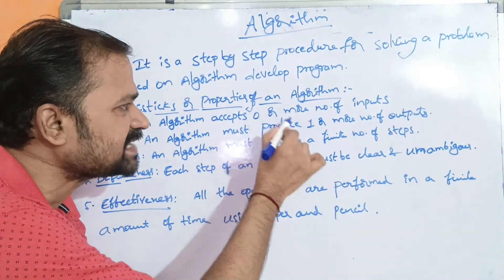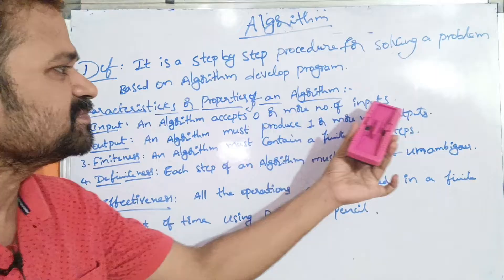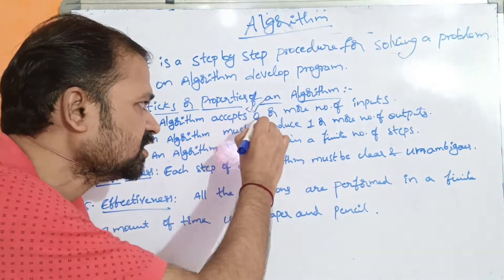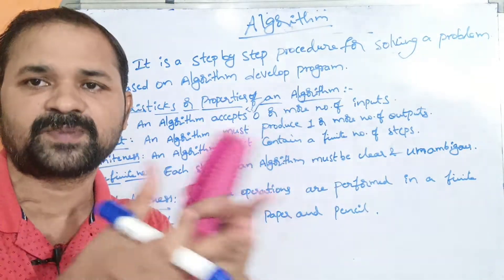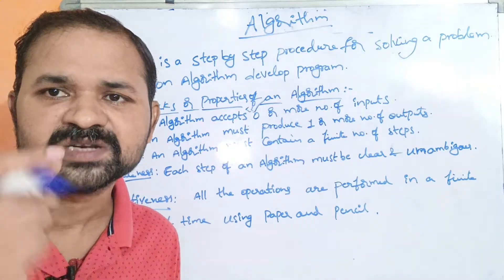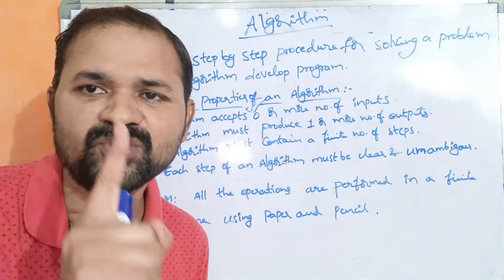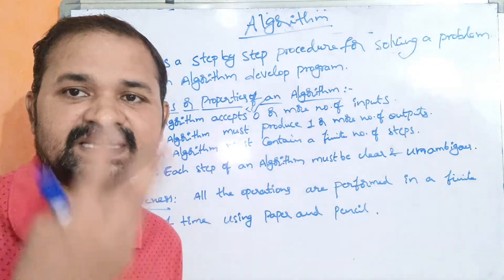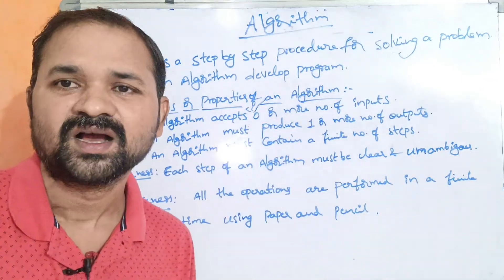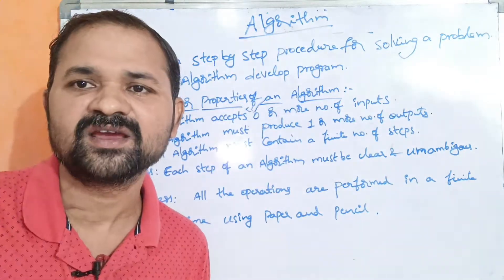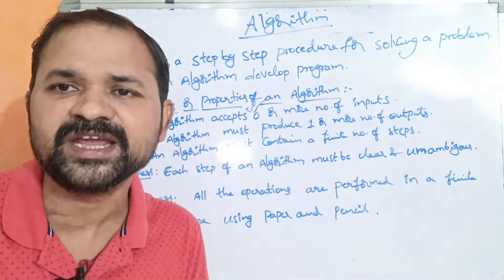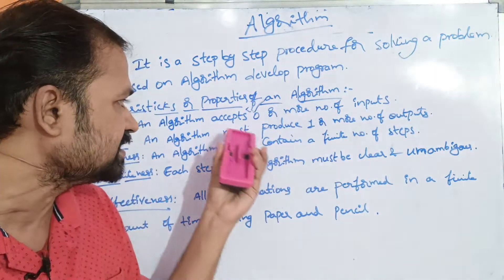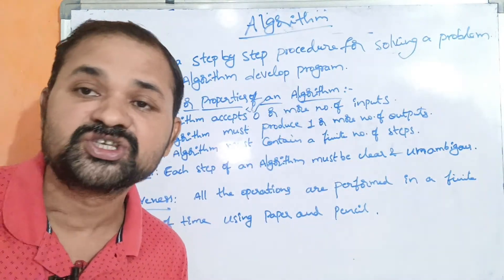First, let's see the property of input. An algorithm accepts zero or more number of inputs. If you want to perform addition on two numbers, that requires two inputs. Suppose three numbers are multiplied — that requires three inputs. Zero inputs means no input is needed; the best example is displaying a 'Welcome to C programming' message. So an algorithm accepts zero or more number of inputs.